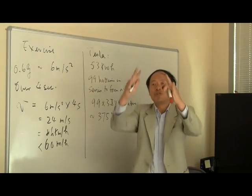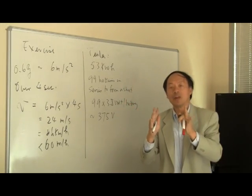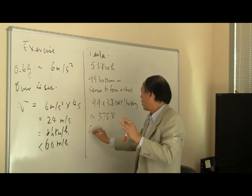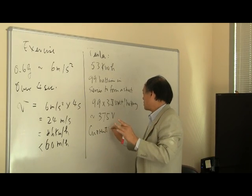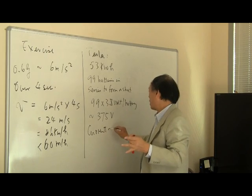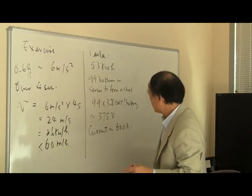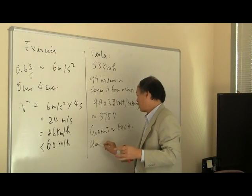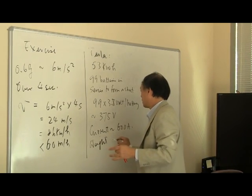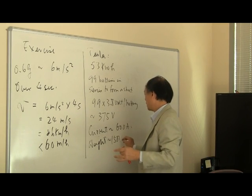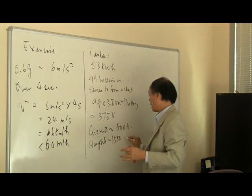Now the sheets are placed in parallel. One sheet has 99 of these batteries and forming 375 volts altogether. And all these 11 sheets of batteries would make the current flow at a total of roughly, so the current is a maximum current flow could be roughly equal to 600 amperes. Also, the weight of the car including the driver is roughly about 1,500 kilograms.